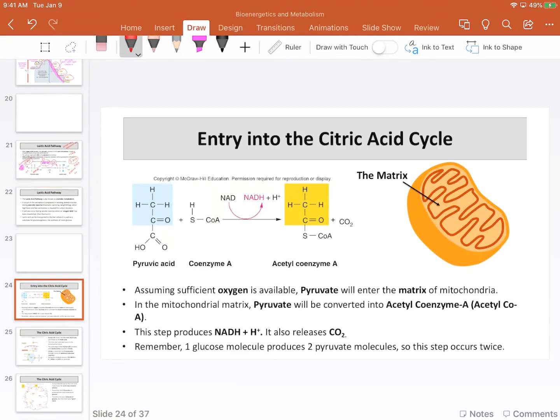The citric acid cycle occurs in the mitochondria. Pyruvate, assuming that there is enough oxygen present, will move into the mitochondria. It's shuttled from the cytosol through the outer mitochondrial layer, or membrane, through the inner membrane into the matrix, which is what you see right here. This is my matrix.